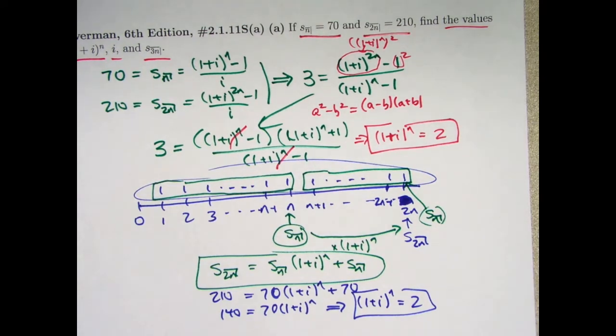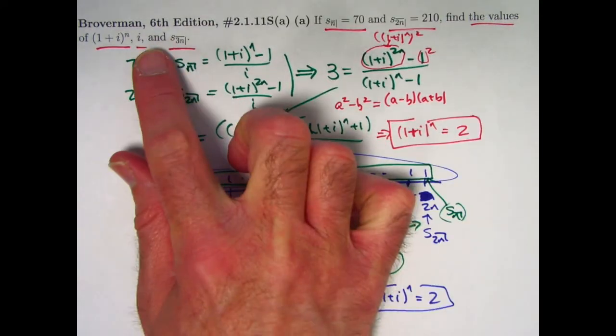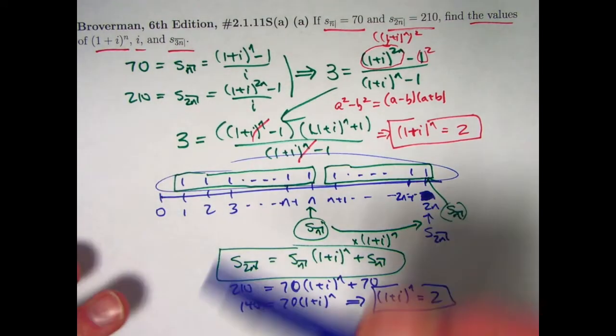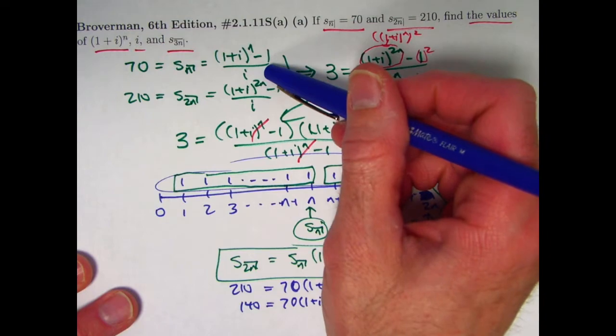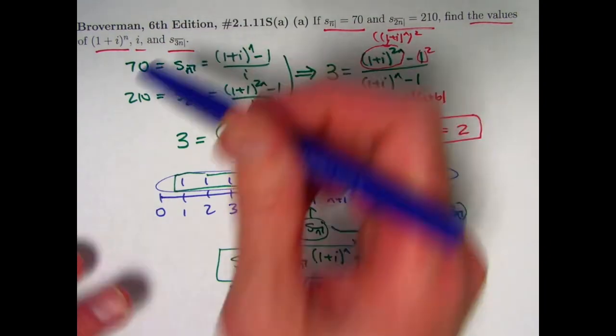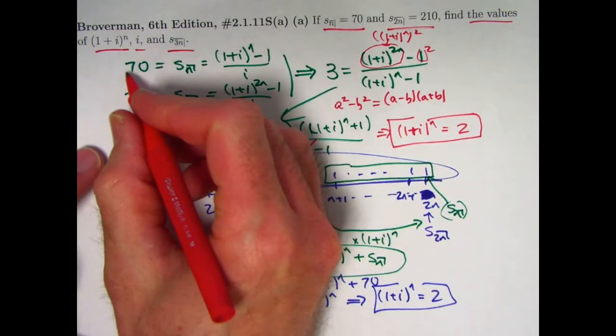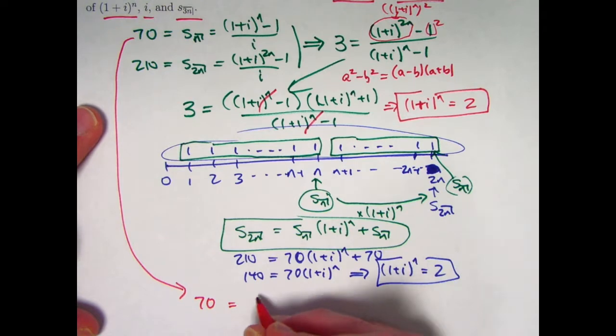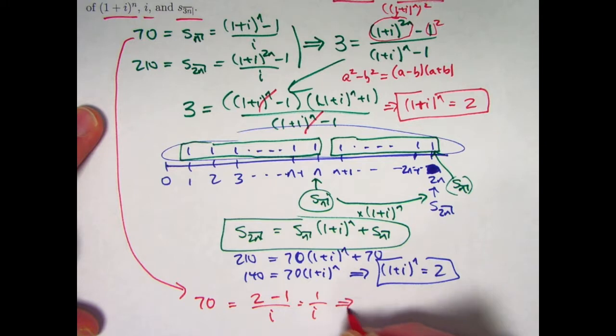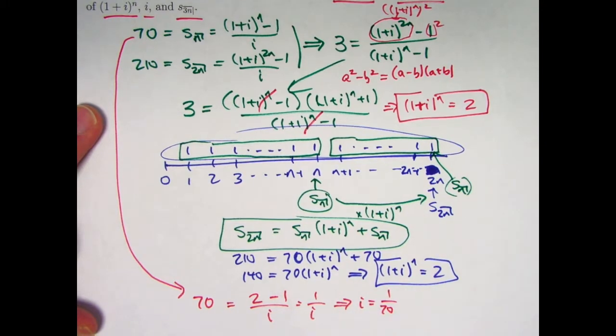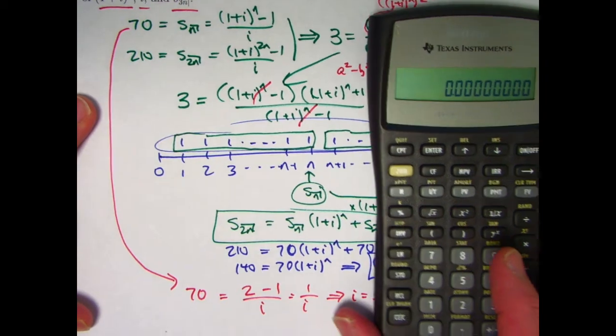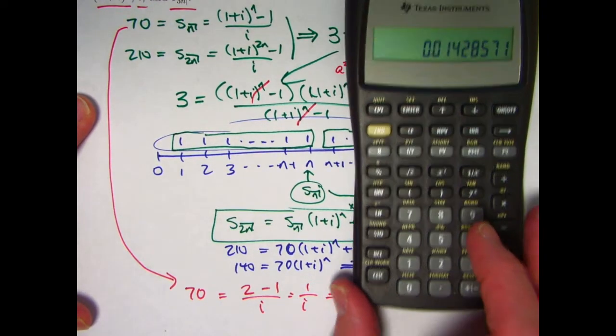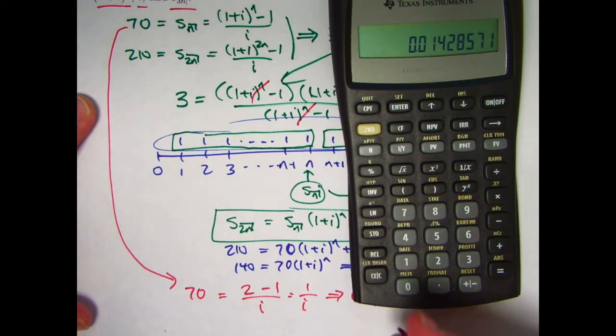All right, we're not done. We want to find i and s_3n. You can go back up here and take either of these equations and solve for i because I know (1+i)^n. Let's take the first one. 70 equals ((1+i)^n - 1) / i. We already found (1+i)^n is 2, so 70 = (2-1)/i = 1/i. Therefore i is 1/70, about 0.014286, about 1.4286 percent if you prefer. That's i.